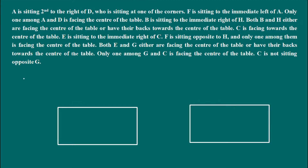Let us write down all the clues one by one and then we will solve the puzzle. Clue 1: A is sitting second to the right of D. Clue 2: D is sitting at one of the corners. Clue 3: F is sitting at the immediate left of A.